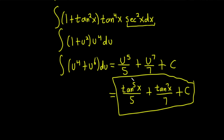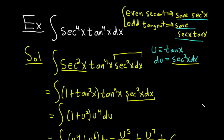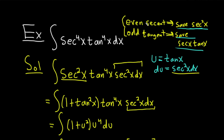We've taken a problem that looks really hard and made it easier. The key points: whenever you have powers of secant and tangent, if you have an even power of secant, save a secant squared; for an odd power of tangent, save a secant tangent. In the second case, let u be secant because its derivative is secant tangent. Memorize these rules and you'll be able to do most of these problems. If you enjoyed this video, check out other videos on Chegg. Until next time, good luck and take care.